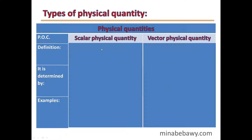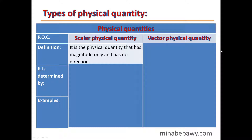Let's compare between Scalar Physical Quantity and Vector Physical Quantity. What's meant by Scalar Physical Quantity? It is a physical quantity that has magnitude only and has no direction. Magnitude means numerical value and unit.